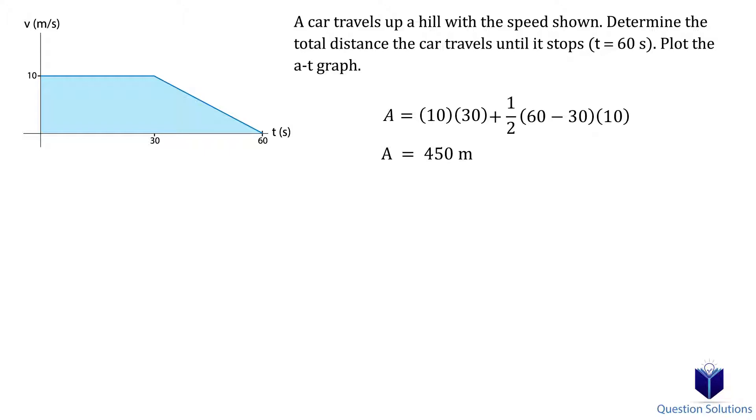The acceleration can be found by taking the derivative of the velocity graph because a equals dv/dt. The equation for the first segment is v equals 10. For the second segment, you can use y equals mx plus b to figure out the equation, which is v equals negative one-third t plus 20.